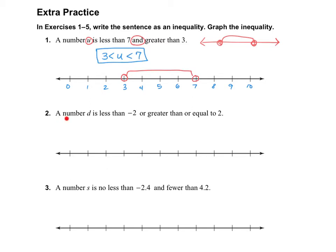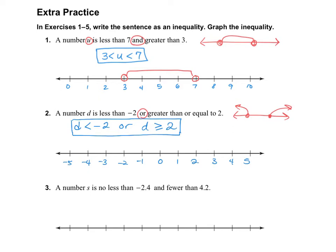For number 2, it says a number d is less than negative 2 or greater than or equal to 2. We have the word OR, so it's going to be the type that goes in opposite directions. We write: d is less than negative 2, or d is greater than or equal to positive 2. So we have an open circle at negative 2 heading down, and a closed circle at positive 2 heading up.